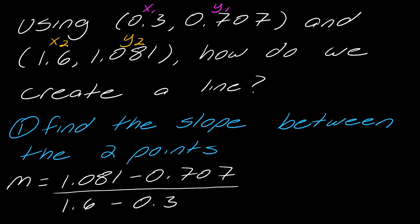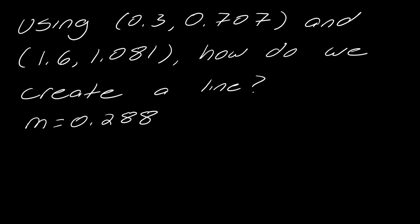Okay so now I can just go ahead and do the subtraction so that is going to come out to 0.374 on top and 1.3 on the bottom and then if I finish this division this will give me just 0.288. Okay so now let's note that, we've got our slope so our slope is here, this 0.288, so that's the first thing that we need.